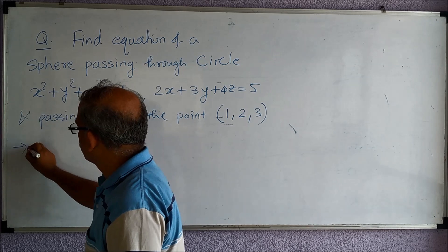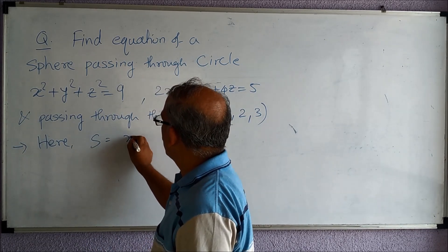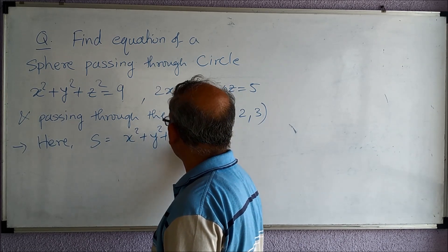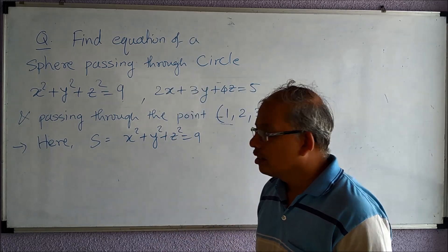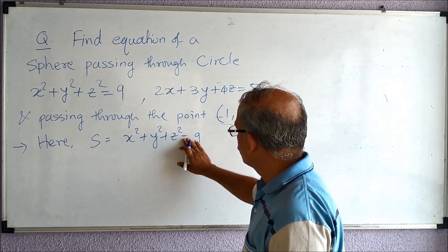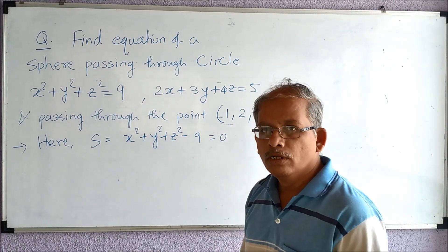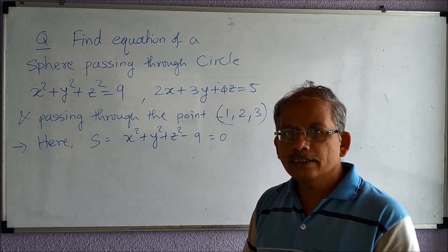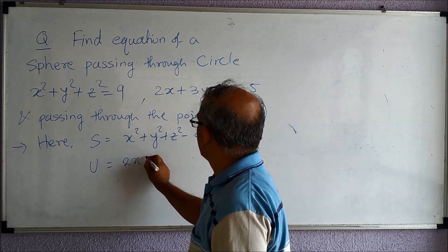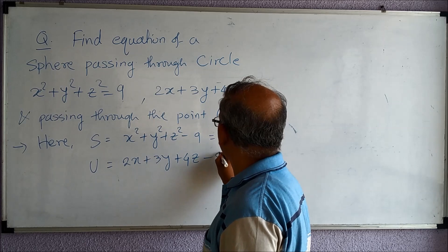Here, S is equal to x squared plus y squared plus z squared minus 9 equal to zero — we take 9 to the other side so the right-hand side equals zero, because we always write our sphere's equation as S equal to zero. Similarly, the plane's equation is U equal to zero, where U equals 2x plus 3y plus 4z minus 5 equal to zero.